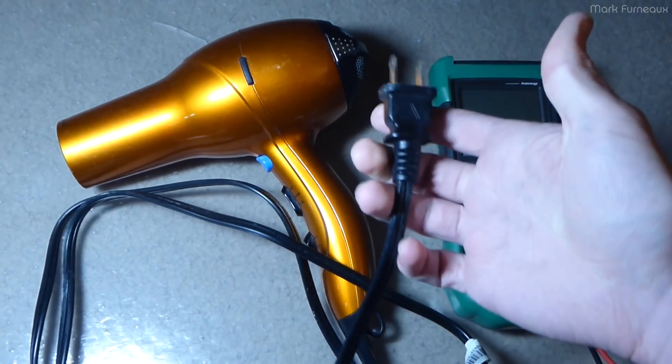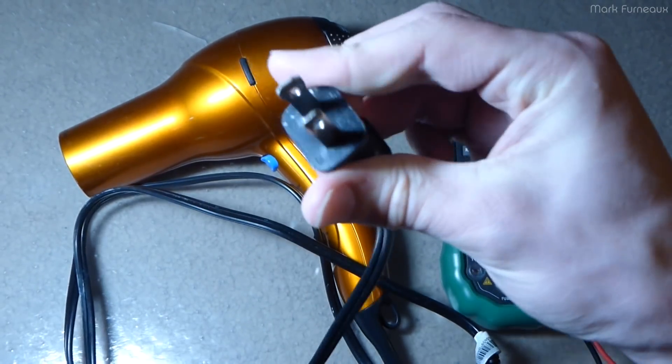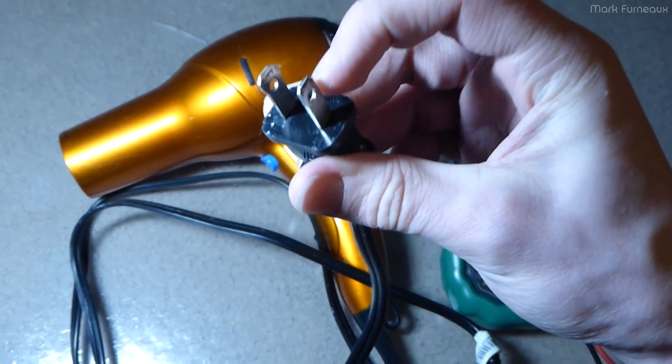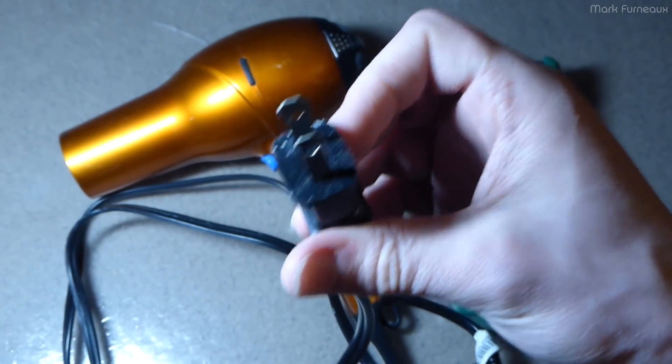So my hairdryer has a permanent cable, but it doesn't really matter. This is a polarized plug, which means that one of the pins is larger than the other. This is the neutral and this is the live, and the idea is that this should only go in an outlet one way.